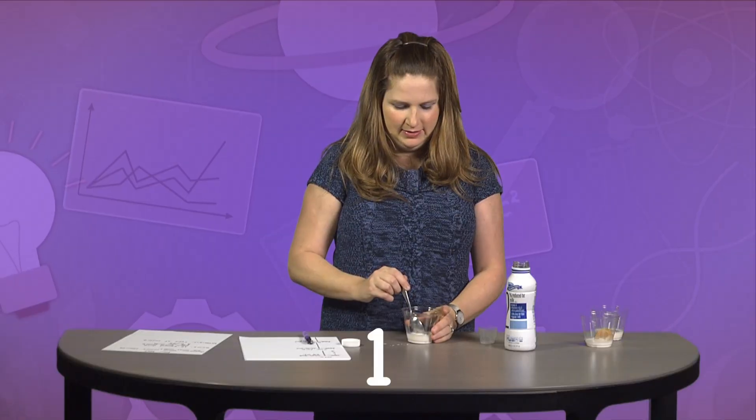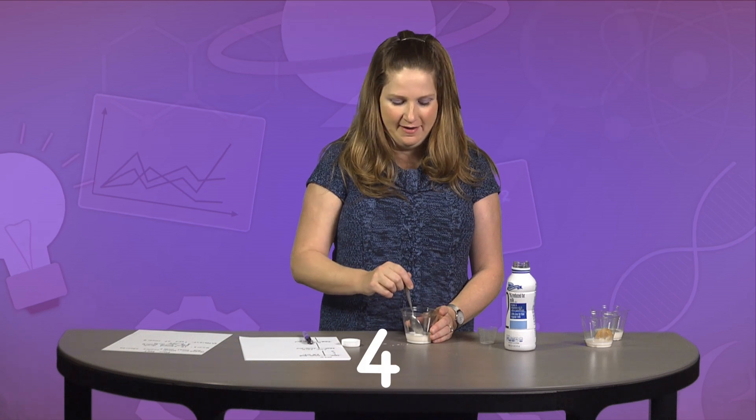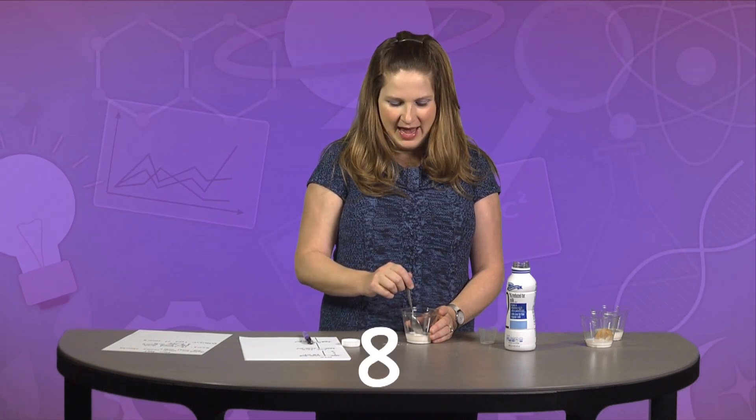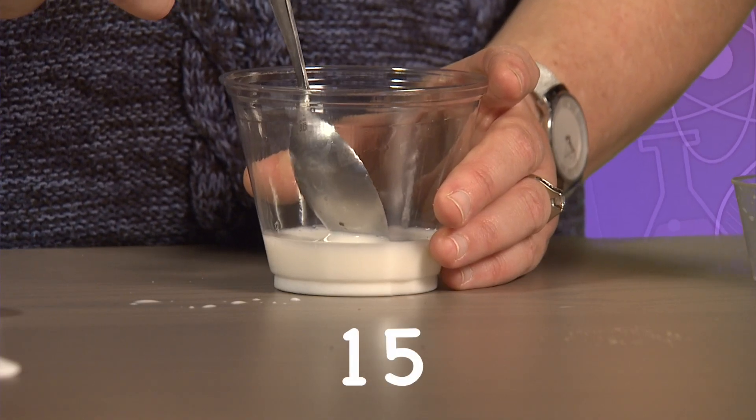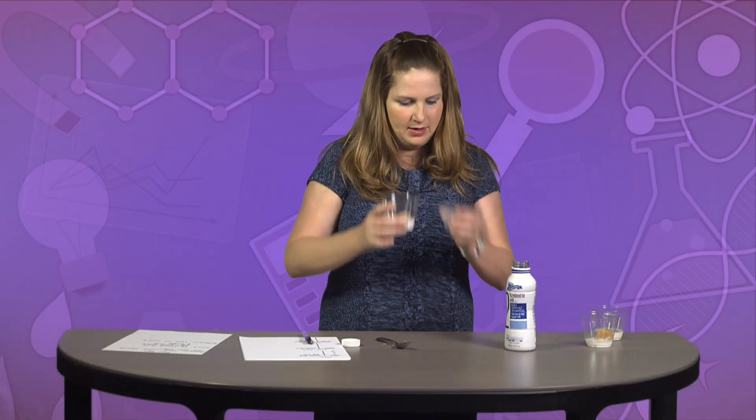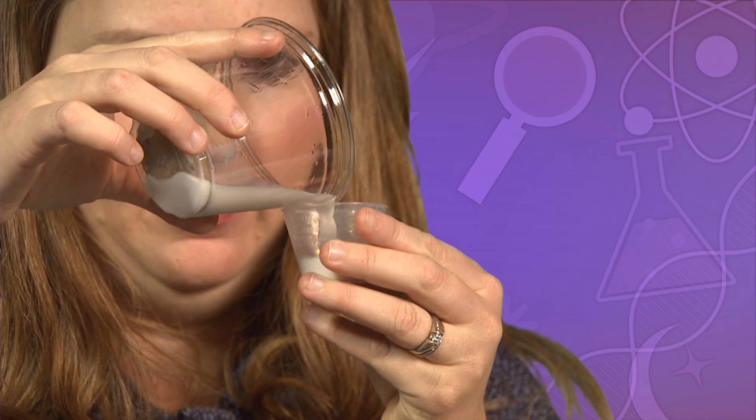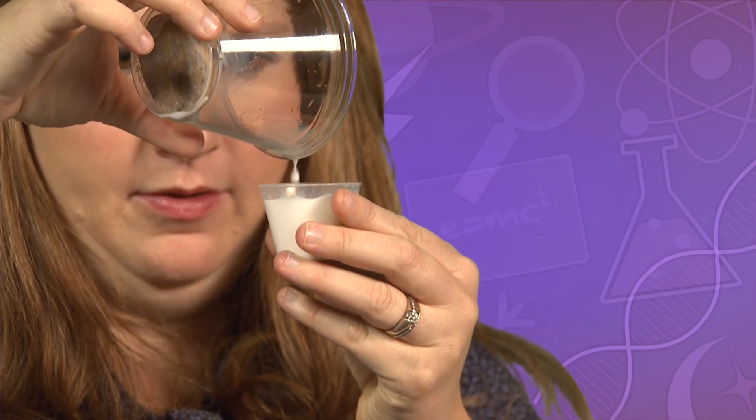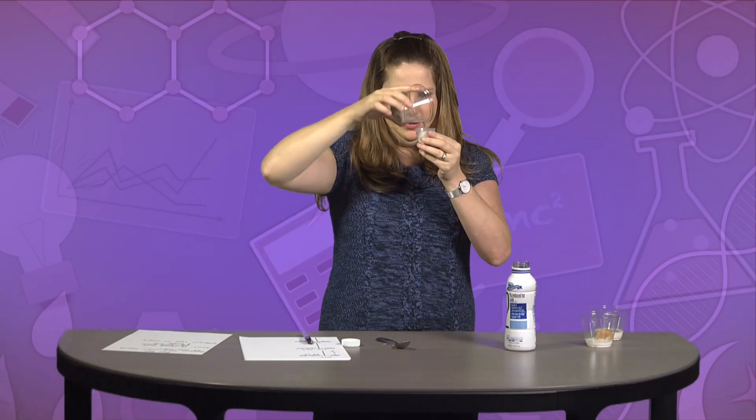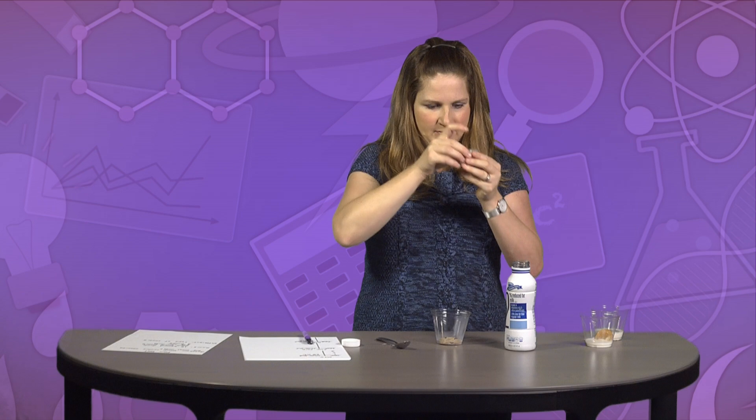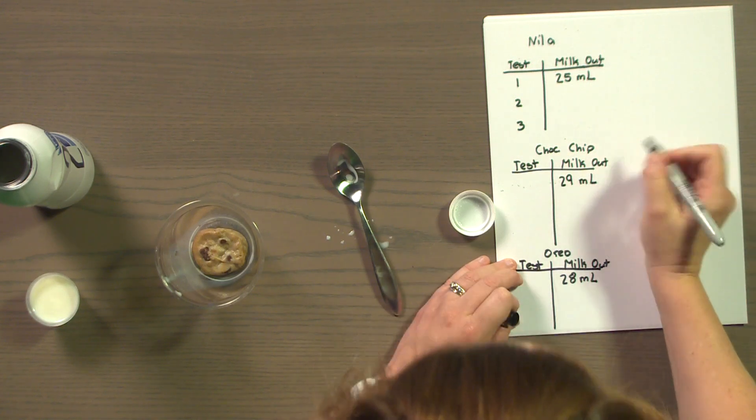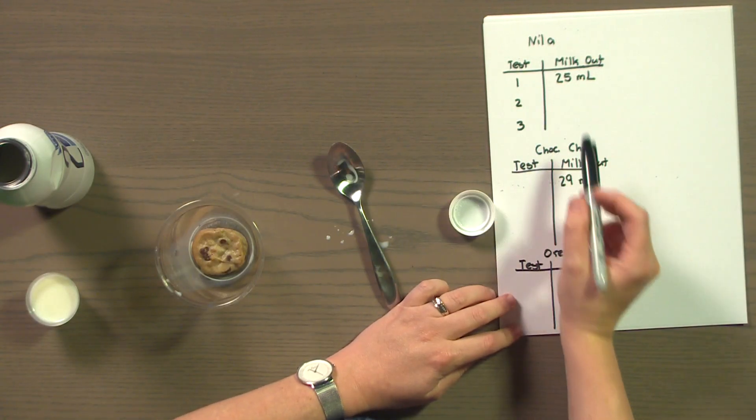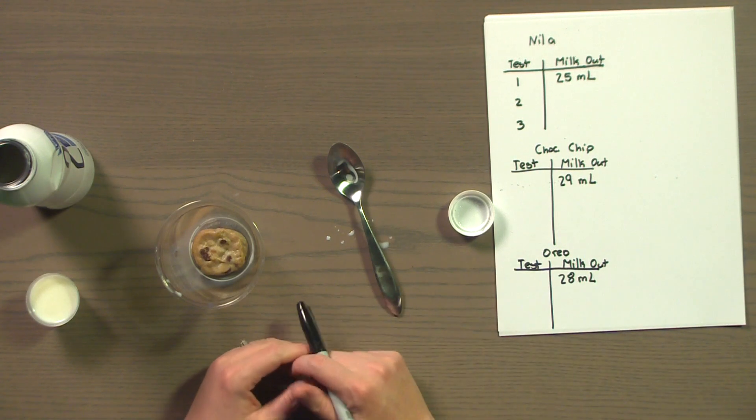Ready? 1, 2, 3, 4, 5, 6, 7, 8, 9, 10, 11, 12, 13, 14, 15. All right. And pouring. All right. That one got out 29 milliliters of milk came out. So now I have all my recorded data for those tests that I've done: 25 milliliters came out of the vanilla, 29 milliliters came out of the chocolate chip, and 28 milliliters came out of the Oreo.